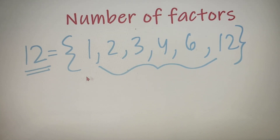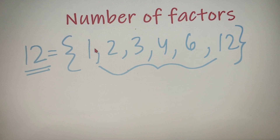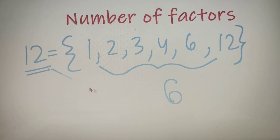I hope that you are clear with the term factors. Now since we are interested in calculating the number of factors, we will simply count all the factors, which comes out to be 6. So the number of factors of 12 is equal to 6.